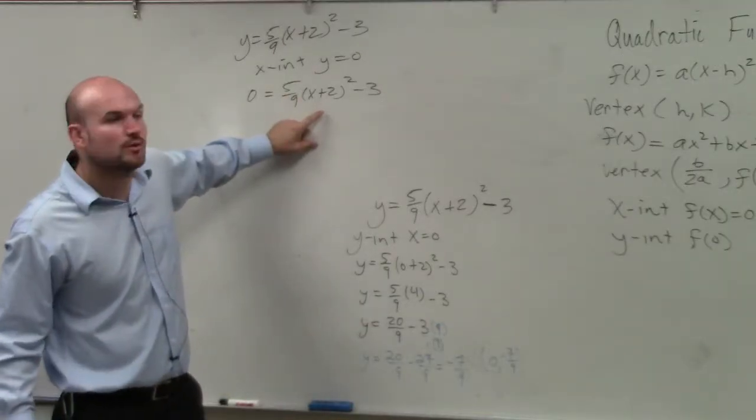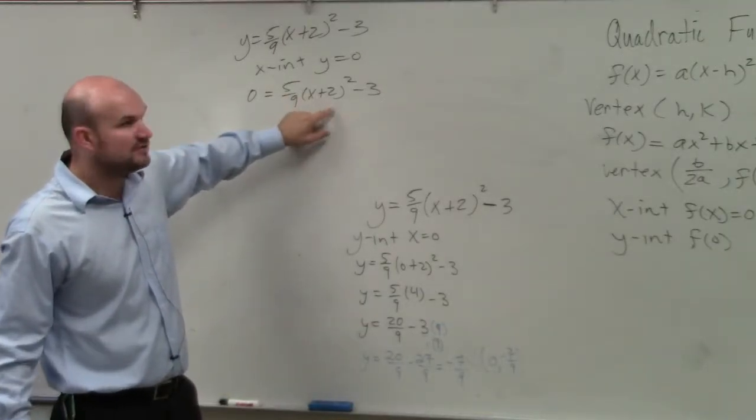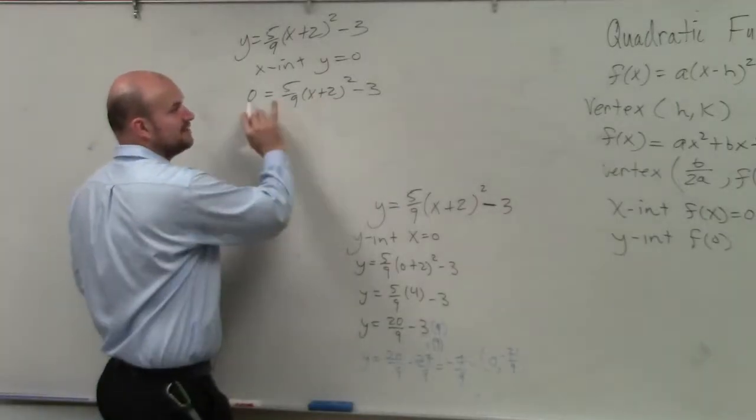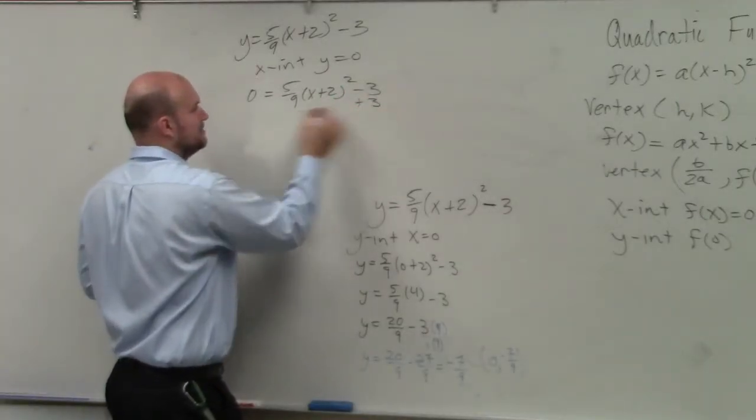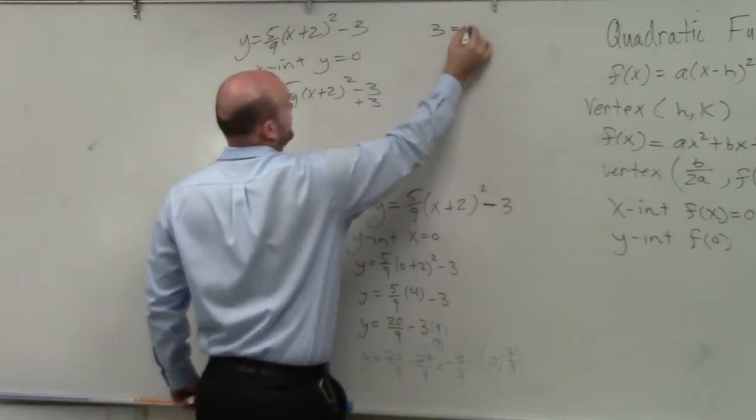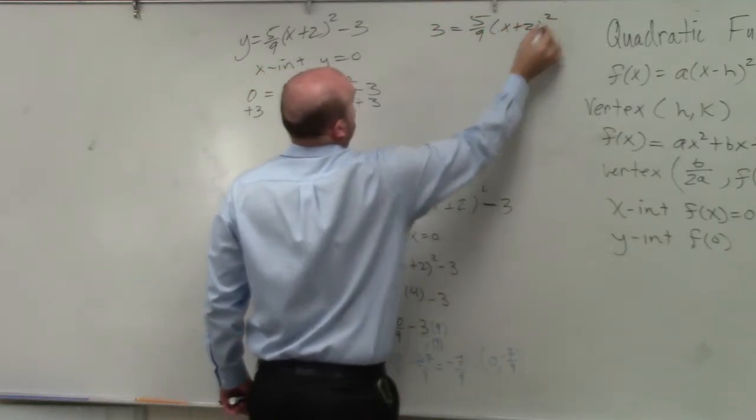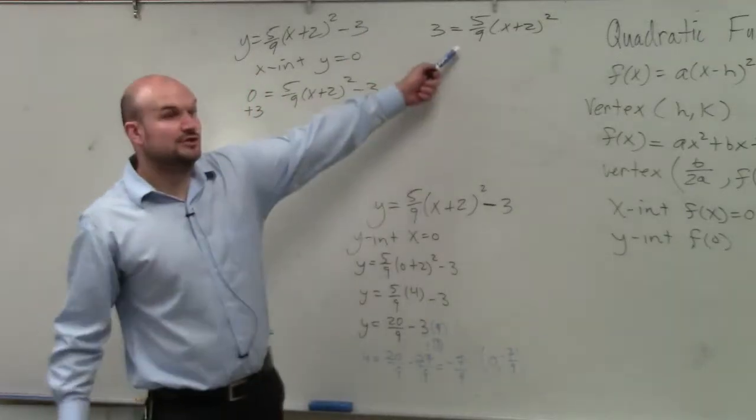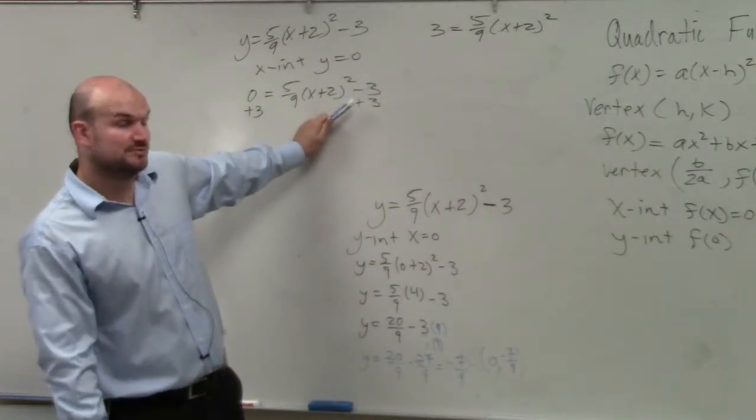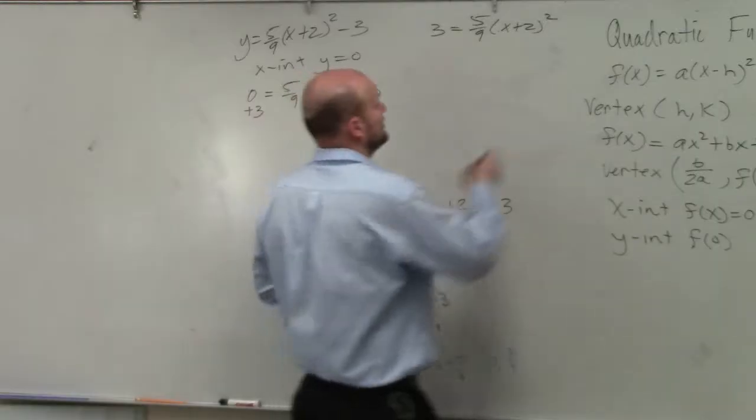You don't need to factor with this. You just need to use your reverse order of operations and the inverse operations. So the first thing we do is undo addition and subtraction. This problem is not going to look pretty. Then we need to undo... So you first always undo addition and subtraction. Then you undo multiplication and division.